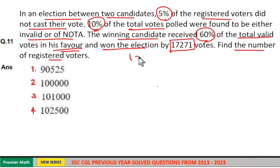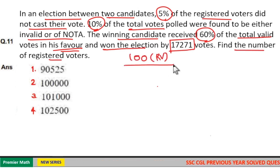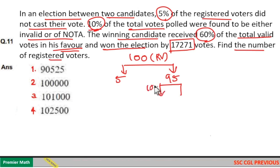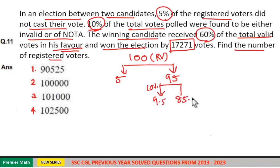Consider registered voters as 100. Then out of this 100, 5% did not cast their vote means 5 people did not cast. Now remaining 95 cast their vote. Out of this 95, 10% of the total votes were invalid. So 10% of 95 is equal to 9.5. So remaining is 90% which is 95 minus 9.5 that is 85.5. So 85.5 votes were valid votes.